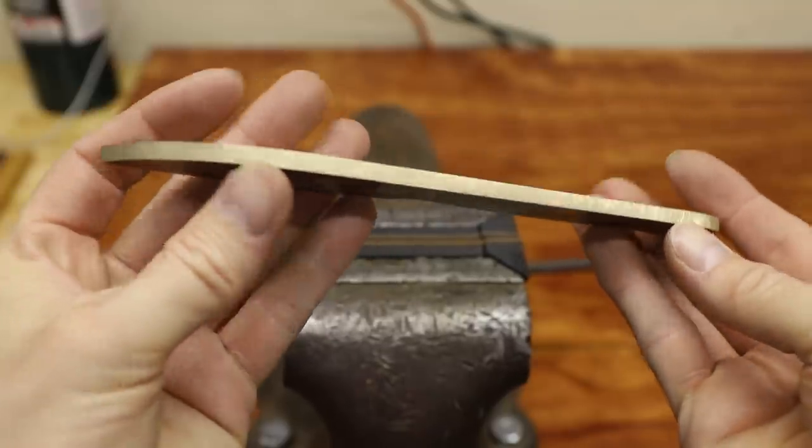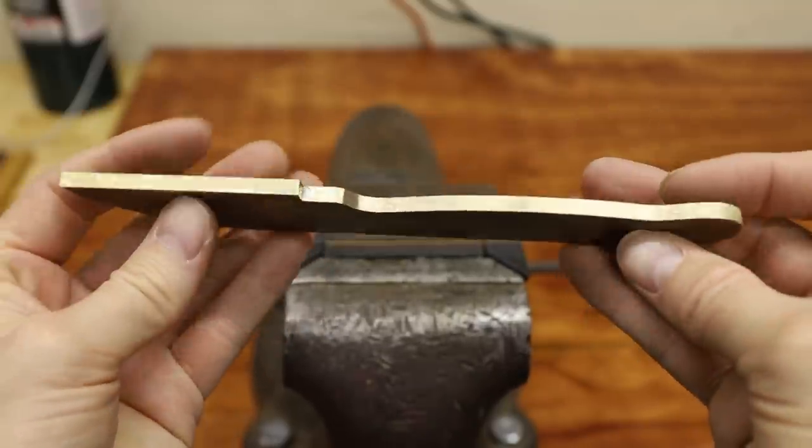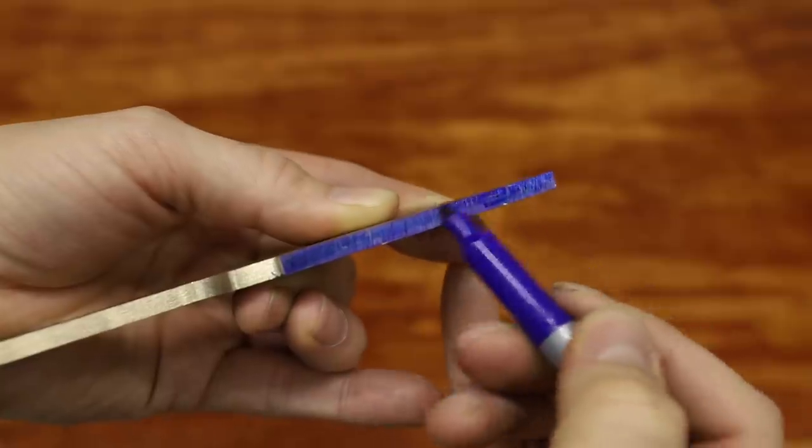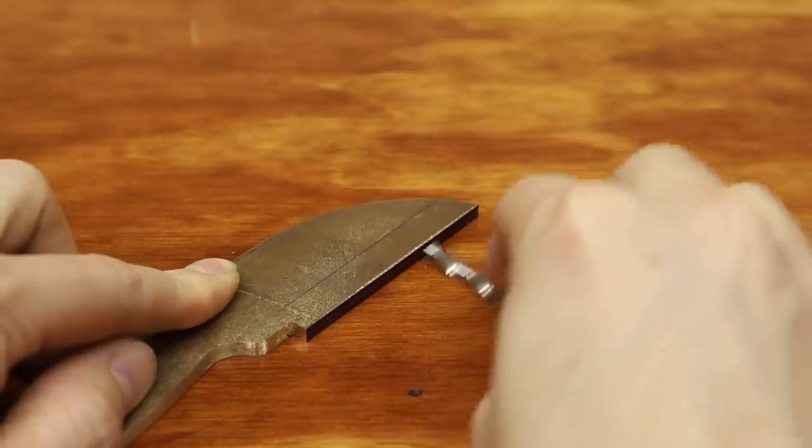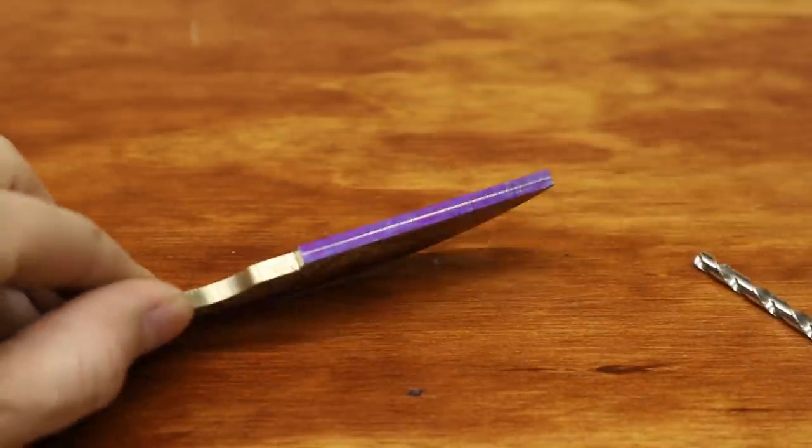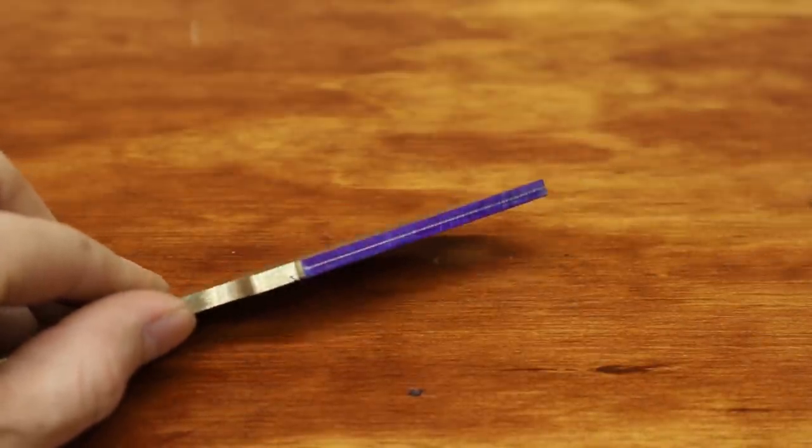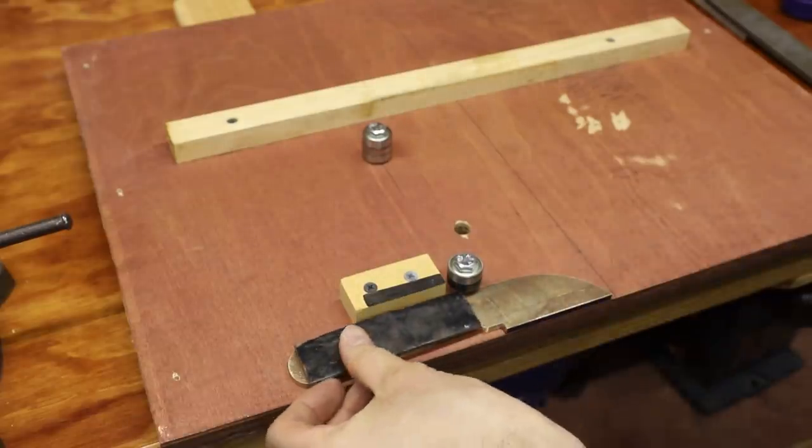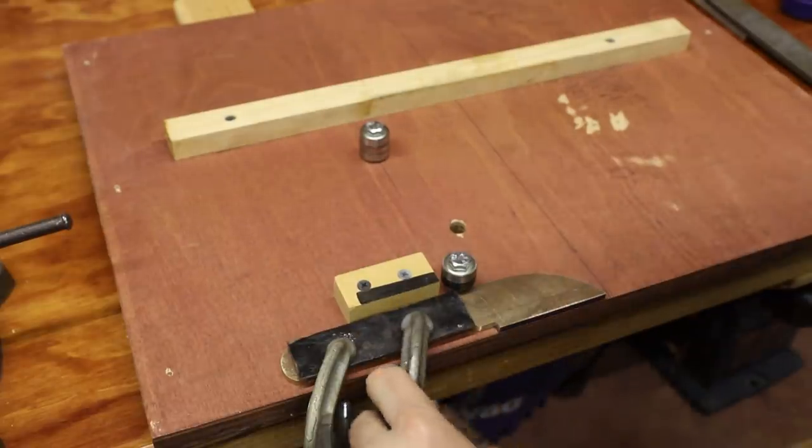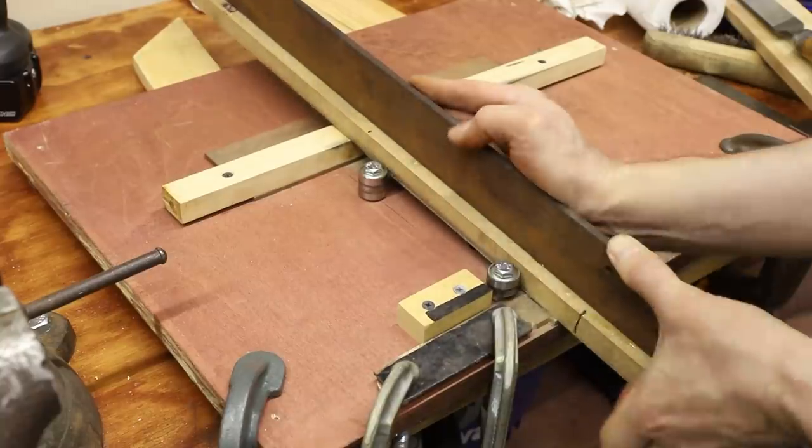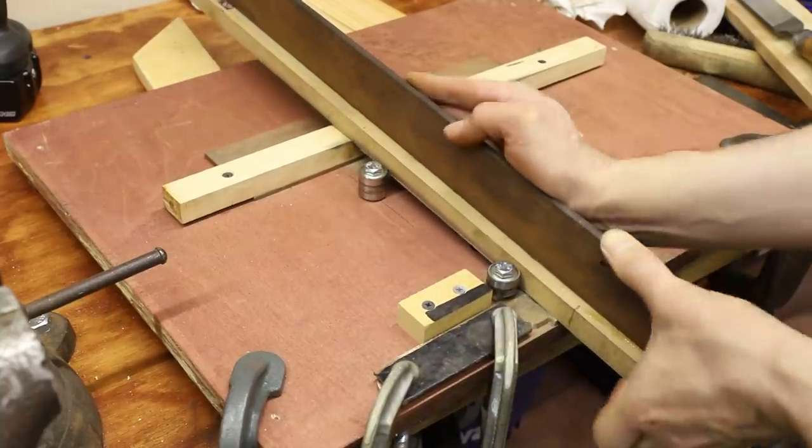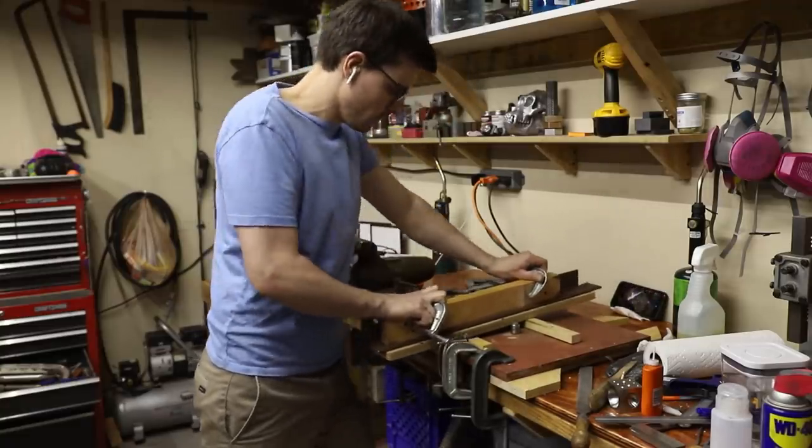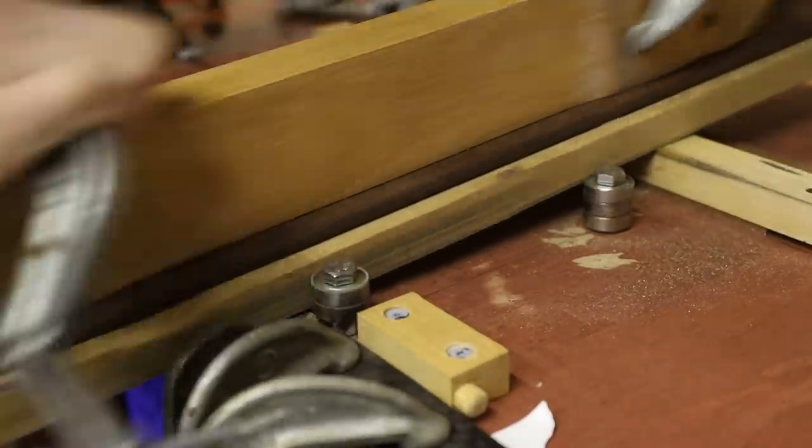I followed that up by using a large disc sander and some hand files. At this point the knife was starting to look pretty good and the next step was to grind in the edge bevel. A grind like this would take an experienced knife maker a few minutes on a belt grinder but unfortunately I don't have a belt grinder so I had to improvise. I built a simple jig to allow me to accurately grind the bevels. This actually worked really well aside from the fact that it took about six hours. I can tell you that this was definitely one of the most tedious things I've ever done.